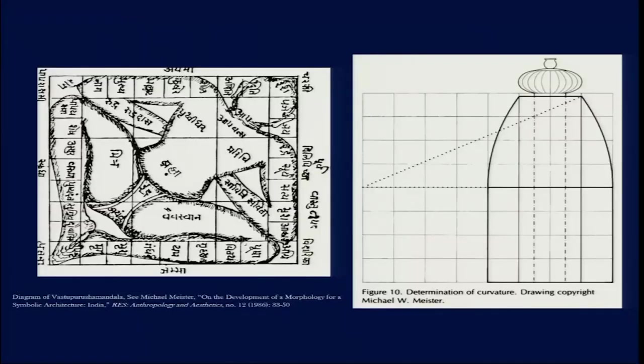Hello everyone. We will be continuing our discussion on Hinduism and temple building and architecture. We ended our discussion on the ground plan for the Garbhagriha. Now, the other thing about the ground plan is that the cardinal directions — north, east, south, and west — play a very important part of this ground plan.